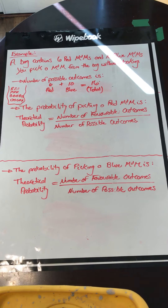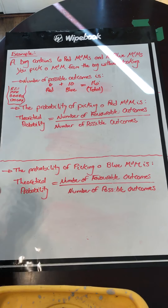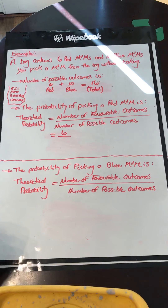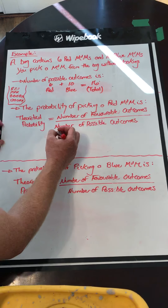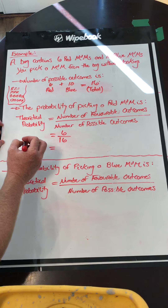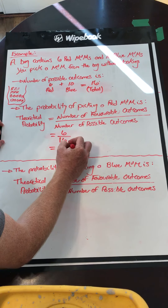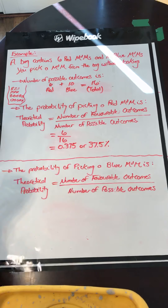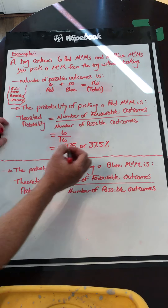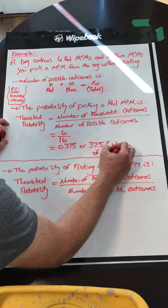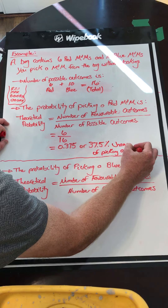Now we want to calculate the probability of picking a red M&M. The number of favorable outcomes — there are 6 in the bag — divided by the number of possible outcomes, which is 16. So that is equal to 0.375 or 37.5%. There's a 37.5% chance of picking a red M&M.